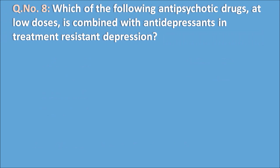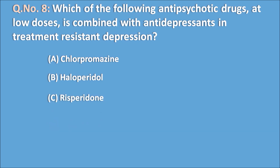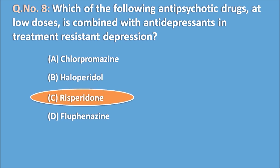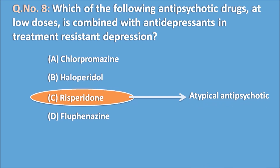Question eight: which antipsychotic drug at low doses is combined with antidepressants in treatment-resistant depression? Options are A. chlorpromazine, B. haloperidol, C. risperidone, and D. fluphenazine. Risperidone stands out as it is an atypical antipsychotic, distinguishing it from the typical antipsychotics in the other options.